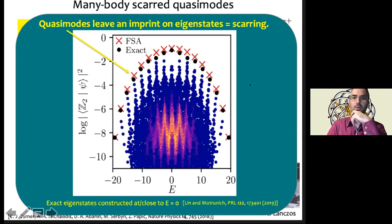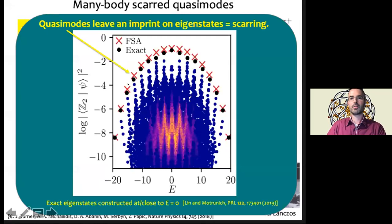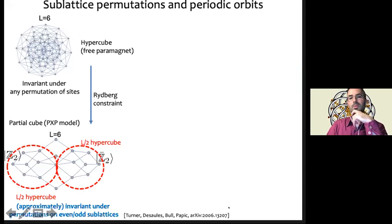One thing I didn't have time to discuss: in the approach based on approximate sublattice permutation symmetry, we actually get not only the top states but also many other candidate states below. Whether that accurately captures those lower states is hard to assess, since they are not so nicely separated and individually identified — but we have that math in one of our papers.